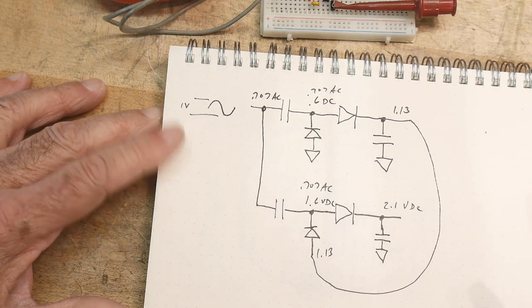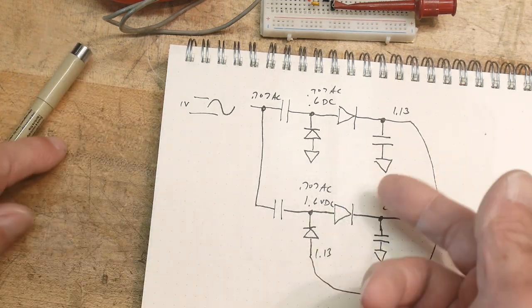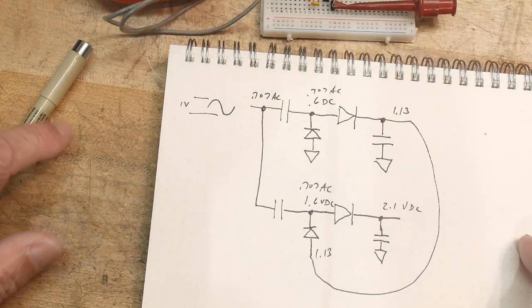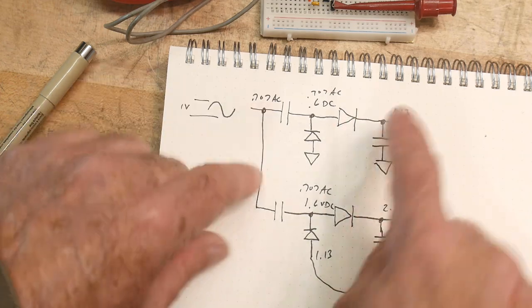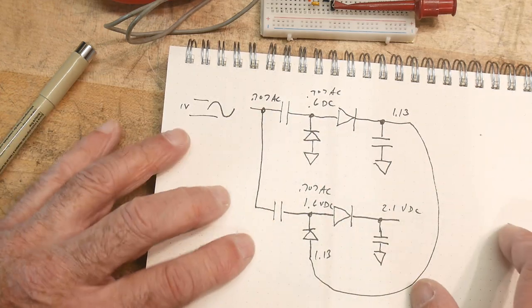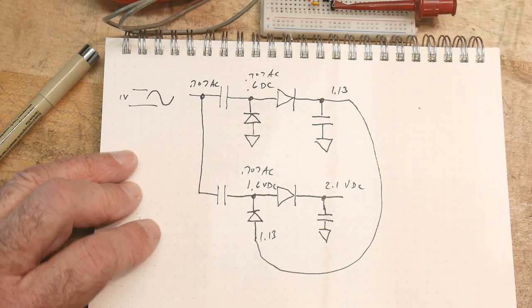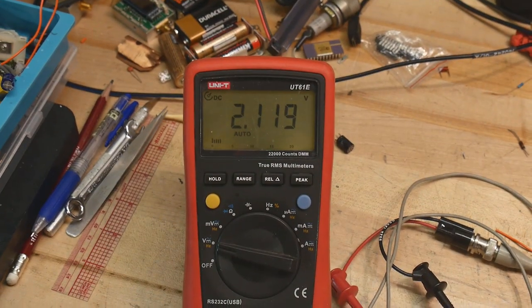Anyway, hope that was fun. I had fun doing it. I had never actually built one. I've used them, but I've never actually built one and kind of measured the different points and how everything goes. So, yeah, it was interesting. Anyway, 1 volt equals 2 volts.